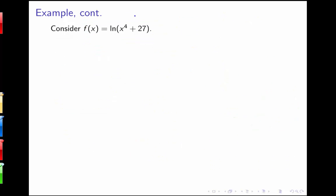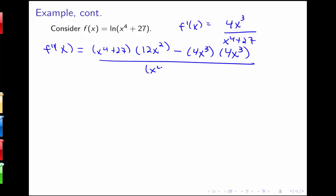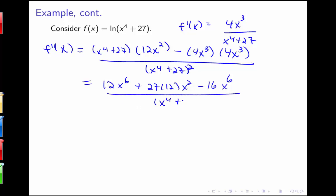Now we need to get information from the second derivative. Our first derivative is 4x cubed all over x to the fourth plus 27. The second derivative is going to require the quotient rule — we have the bottom function times the derivative of the top function, which is 12x squared, minus the top function times the derivative of the bottom function, all over that bottom function squared.